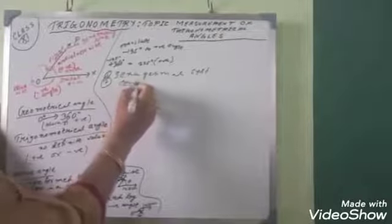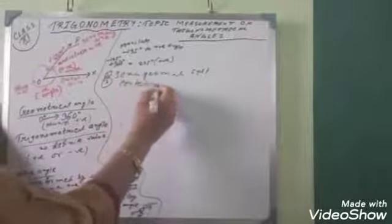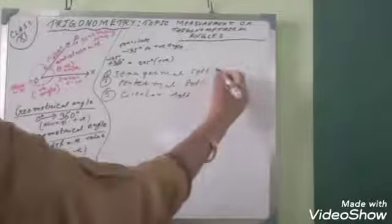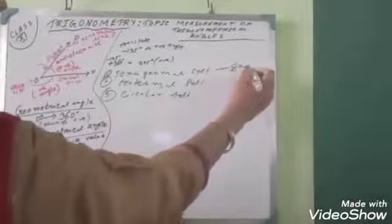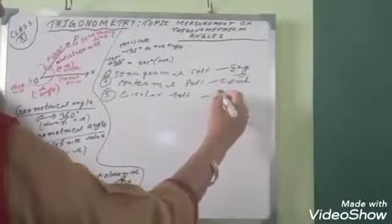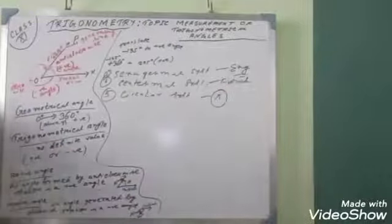The first is the sexagesimal system — that is the English version. The second is the centesimal system — that is the French version. The third is the circular system, where we always write in terms of pi, which you have already done in Class 10.